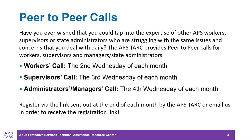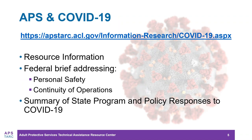We'd like to make a quick plug for our peer-to-peer calls. We have three of these calls each month for APS workers, APS supervisors, and APS administrators respectively. You can see the schedule on your screen. If you'd like to register for these calls, just visit our web page and click on the peer support link. You can also reach out to us by email, and you'll see that email at the end of the webinar. We encourage you to take a look at our APS and COVID-19 page — it contains resource information, a federal brief addressing personal safety, continuity of operations, and a summary of state program responses to the pandemic. You can download today's slides under the handout section of your GoToWebinar control panel, or just google APS TARC and click on the COVID-19 link at the top of the page.